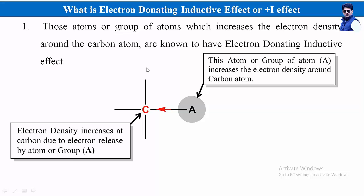Now we study in detail what is the electron donating inductive effect or plus I effect. Those atoms or groups of atoms which increase the electron density around the carbon atom are said to have the electron donating inductive effect. Atom A or a group of atoms A increases the electron density around the carbon atom, so this effect is known as the electron donating inductive effect.